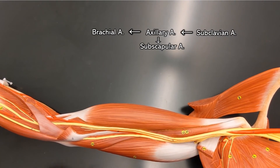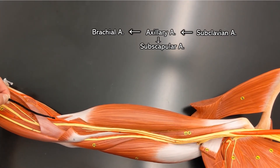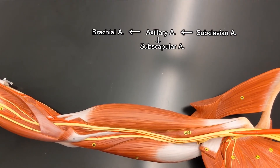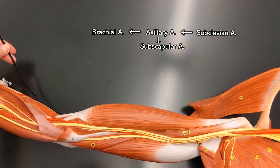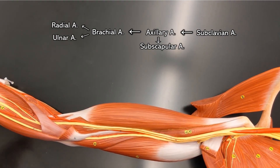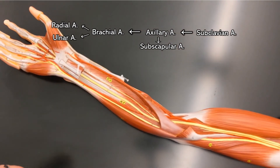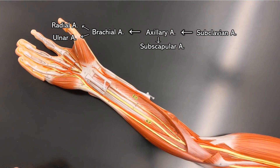As the brachial artery passes onto your forearm, it splits into two. This is the radial artery, and that's the ulnar artery. It's a lot more obvious which one is which once you can see the rest of the hand.